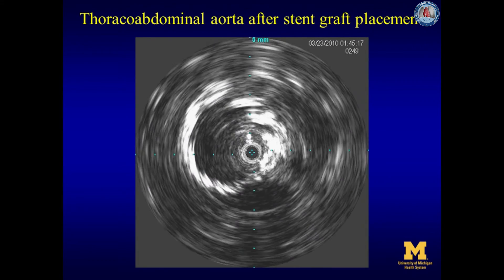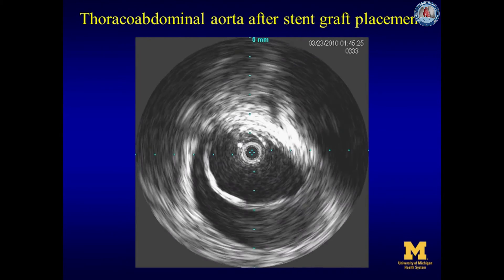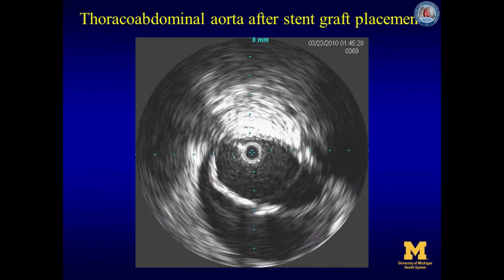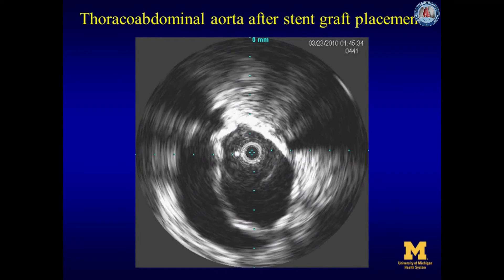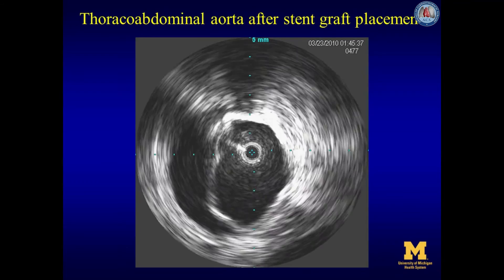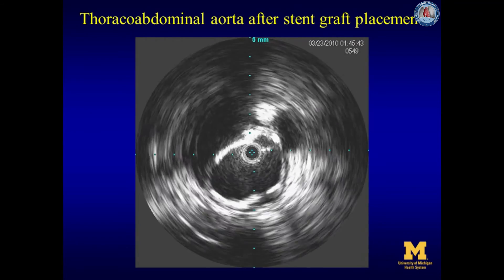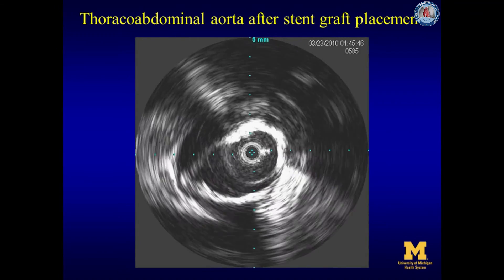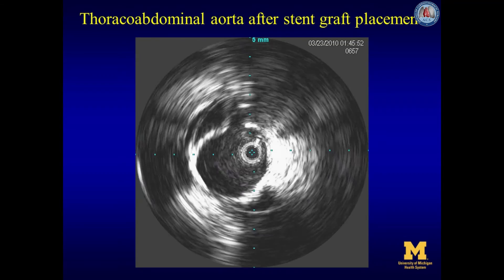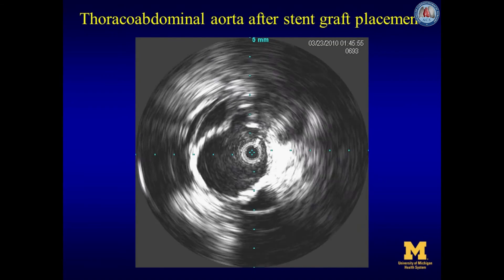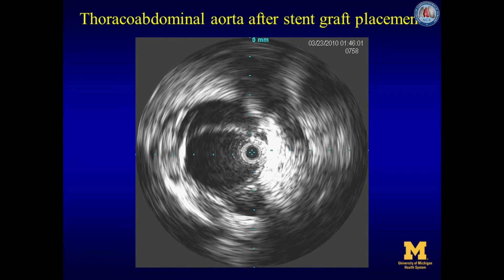The abdominal aorta true lumen is now expanded, including the previously almost totally collapsed portion seen on pre-treatment IVUS. The celiac artery comes off at 1 o'clock and the superior mesenteric artery at 12 o'clock. The right renal artery comes off at 12 o'clock and the left renal artery at 5 o'clock. The infrarenal aorta true lumen is also expanded.